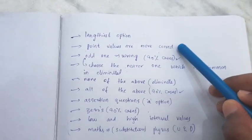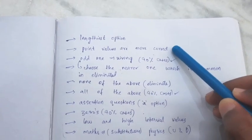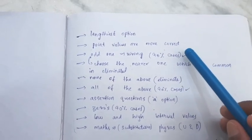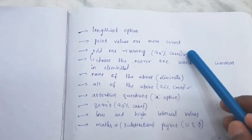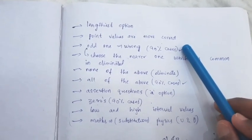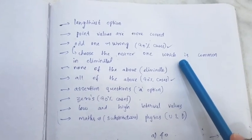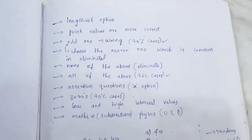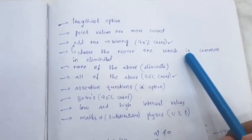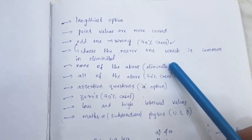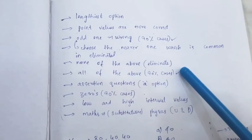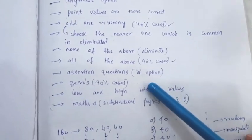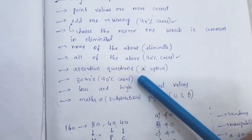Second point: point values are more correct. For example, if you have integers and point values in options, point values are likely correct. Next — odd one out: if one option looks different, that is generally tough, so you can eliminate that option. Choose the nearest common one among remaining options — that option is likely correct. Next: 'none of the above' — you can eliminate that. 'All of the above' is maximum correct. For assertion and reasoning questions, the first option is correct in maximum cases. If options contain zeroes, maximum zeroes are correct by chance.